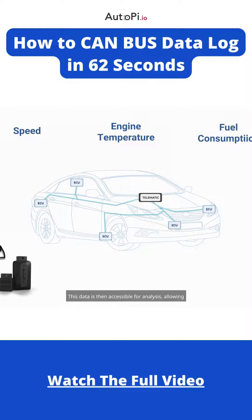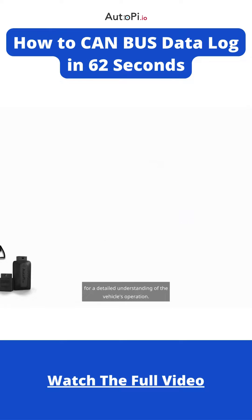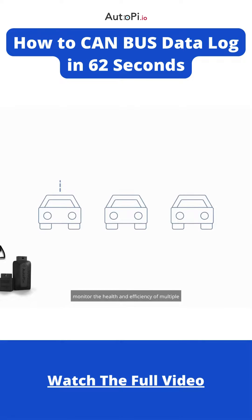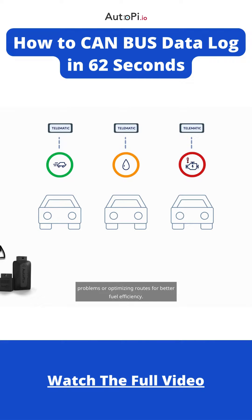This data is then accessible for analysis, allowing for a detailed understanding of the vehicle's operation. For instance, a fleet manager could use AutoPi to monitor the health and efficiency of multiple vehicles, identifying issues before they become major problems, or optimizing routes for better fuel efficiency.